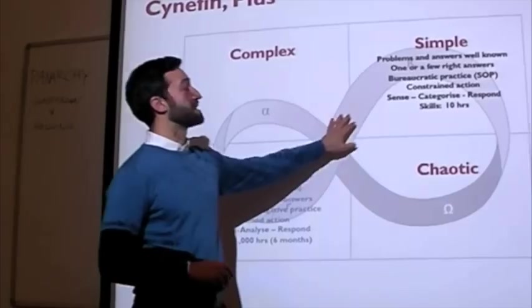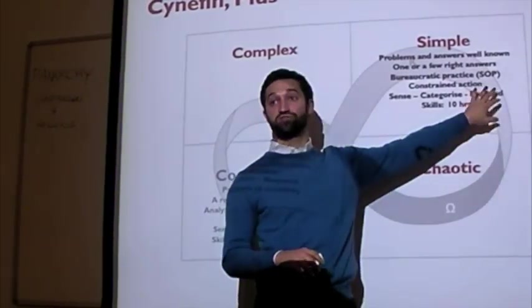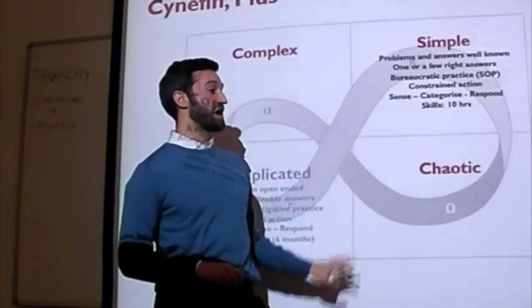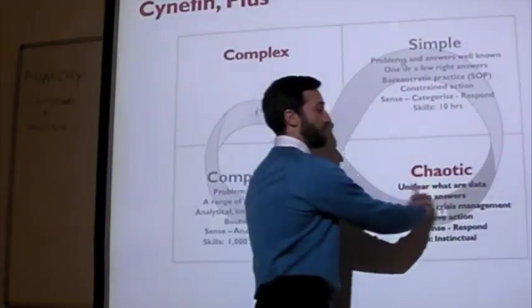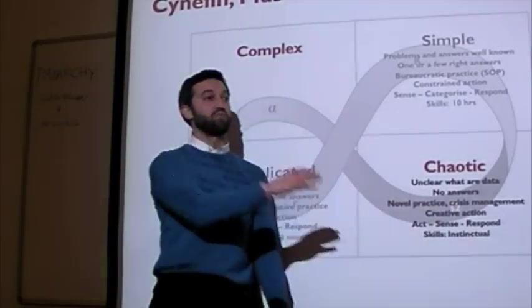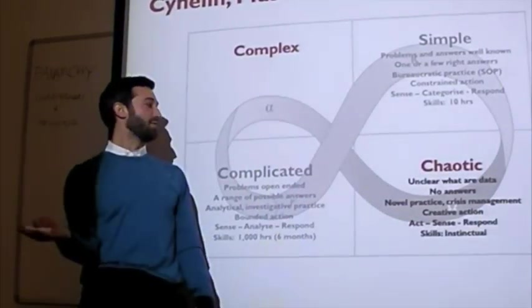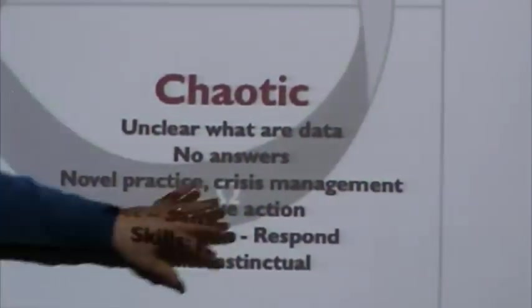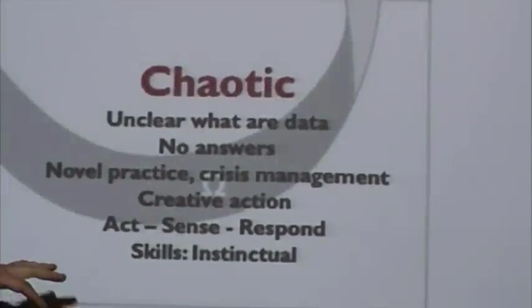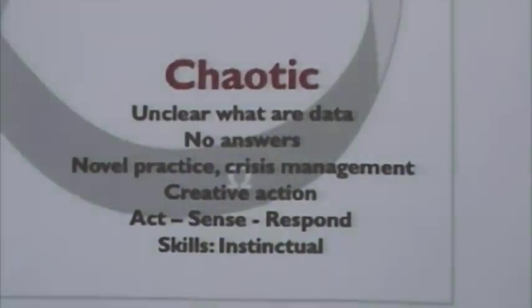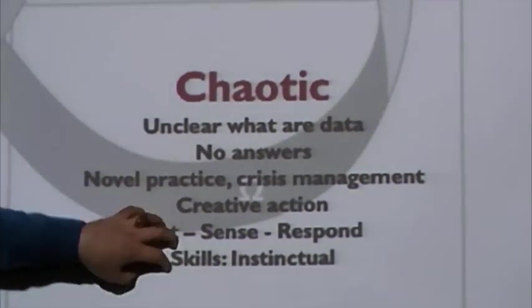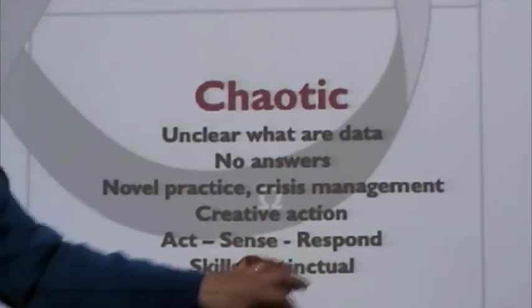This is also why bureaucracies are vulnerable to change, because when things go beyond the standard operating procedures, they become much more difficult to deal with. That's what gets you into this chaotic realm where you're not even sure what the data is. You don't know what's data, what's solution, what's problem. There are no answers. This requires really novel practices. This is like crisis management. You actually have to create your strategic imperative through creative action. You act first, you sense the result, and then you respond.